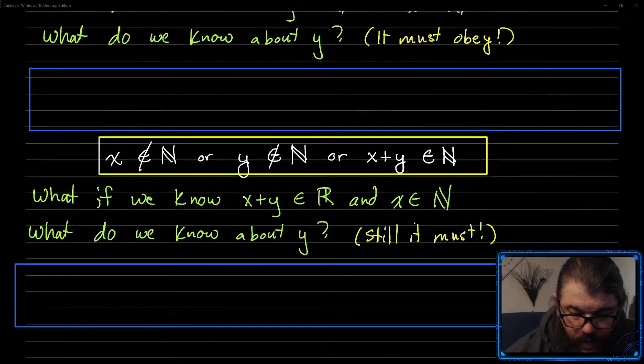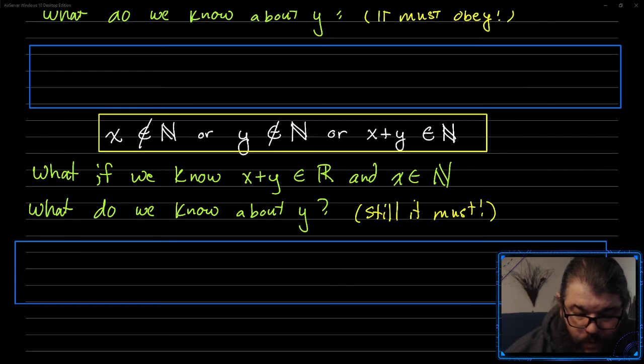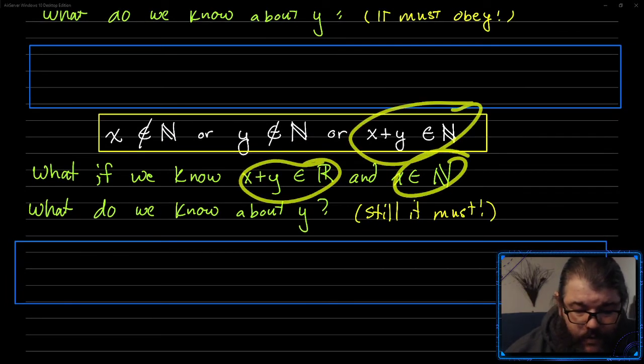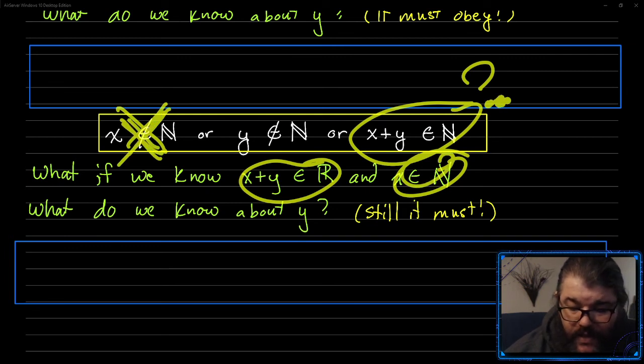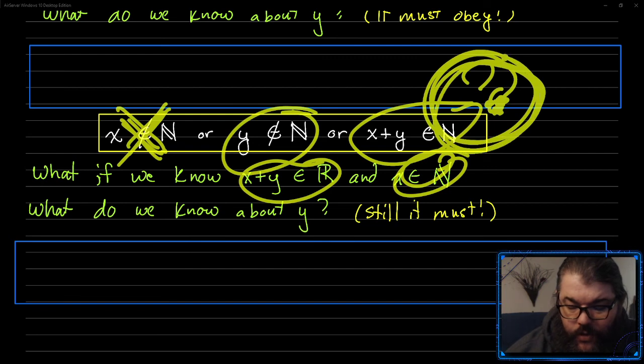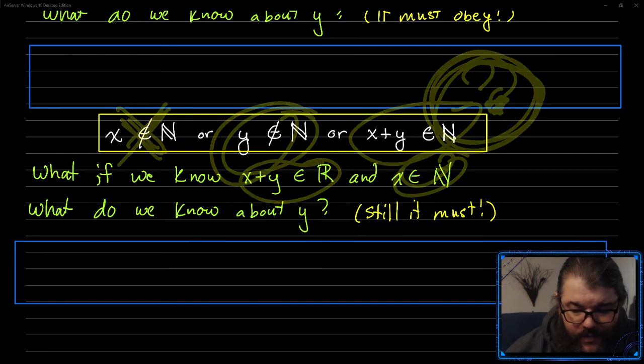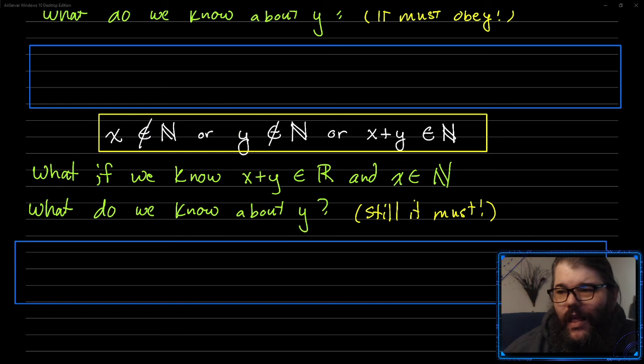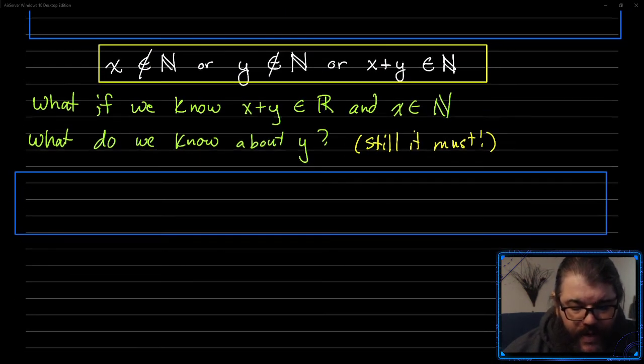Alright, let's try another one. If we know that x plus y is real, and we know that x is a natural number. So what that leads us to is we know that x is not, we know that this part is not true, right? Because x is a natural number. But just because x plus y is real doesn't mean it's not natural, right? So three is a natural number, but it's also a real number. And so we end up not learning anything about y here, because we don't know whether this is true or not. And so we can't say anything about the rest of this. It's super cool, right? And this is how these things are used in proof mechanisms.